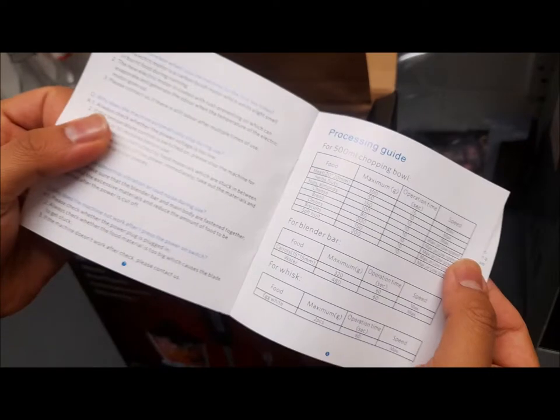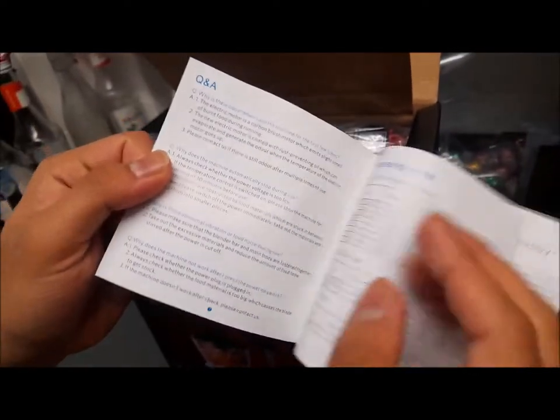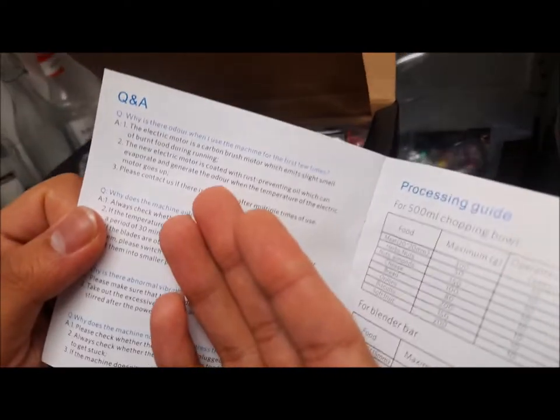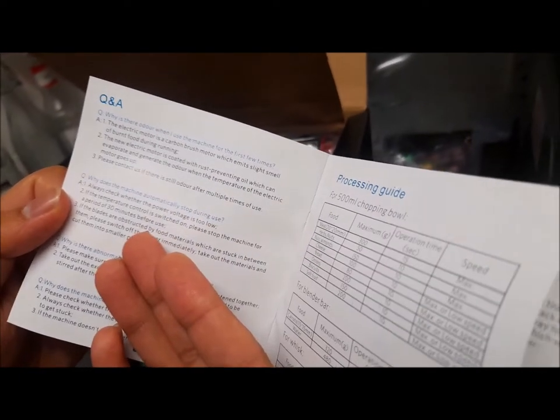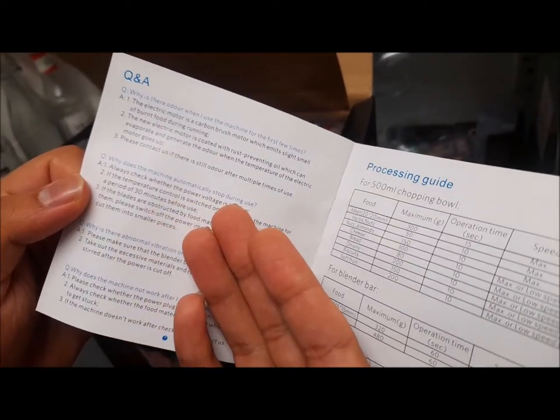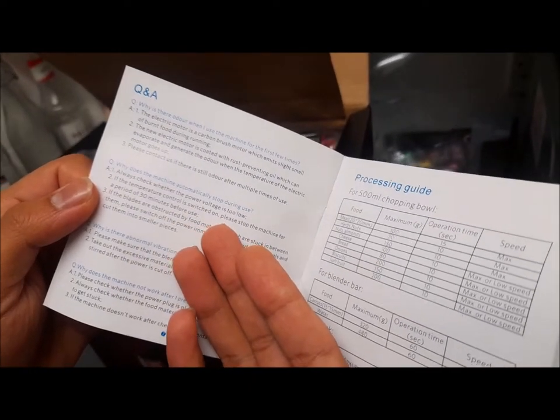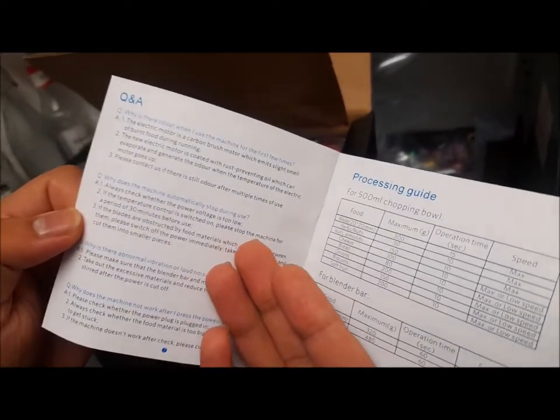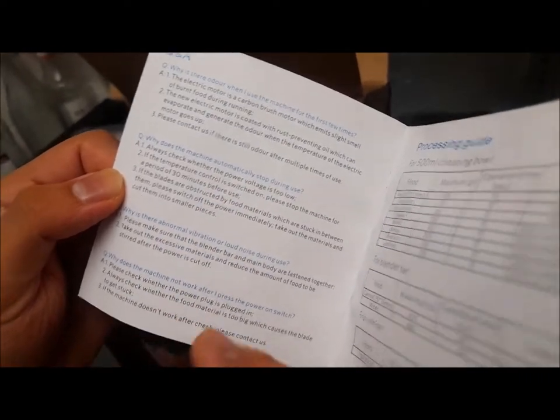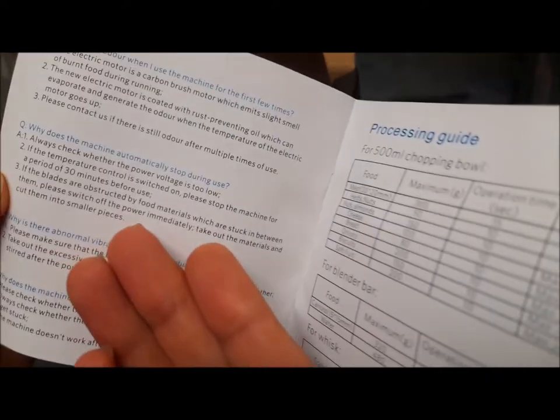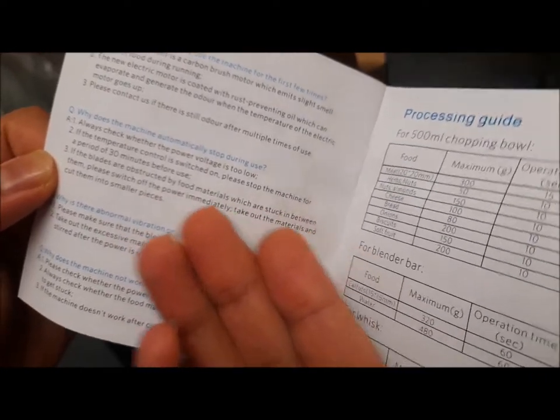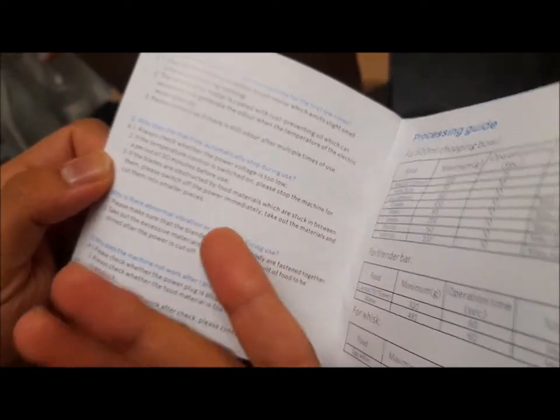There's a Q&A section. It says why there is an odor the first time when you use it, and what if the machine automatically stops because of the temperature control switch. It says please stop the machine for a period of 30 minutes before use, or if the blades are obstructed by large food materials.